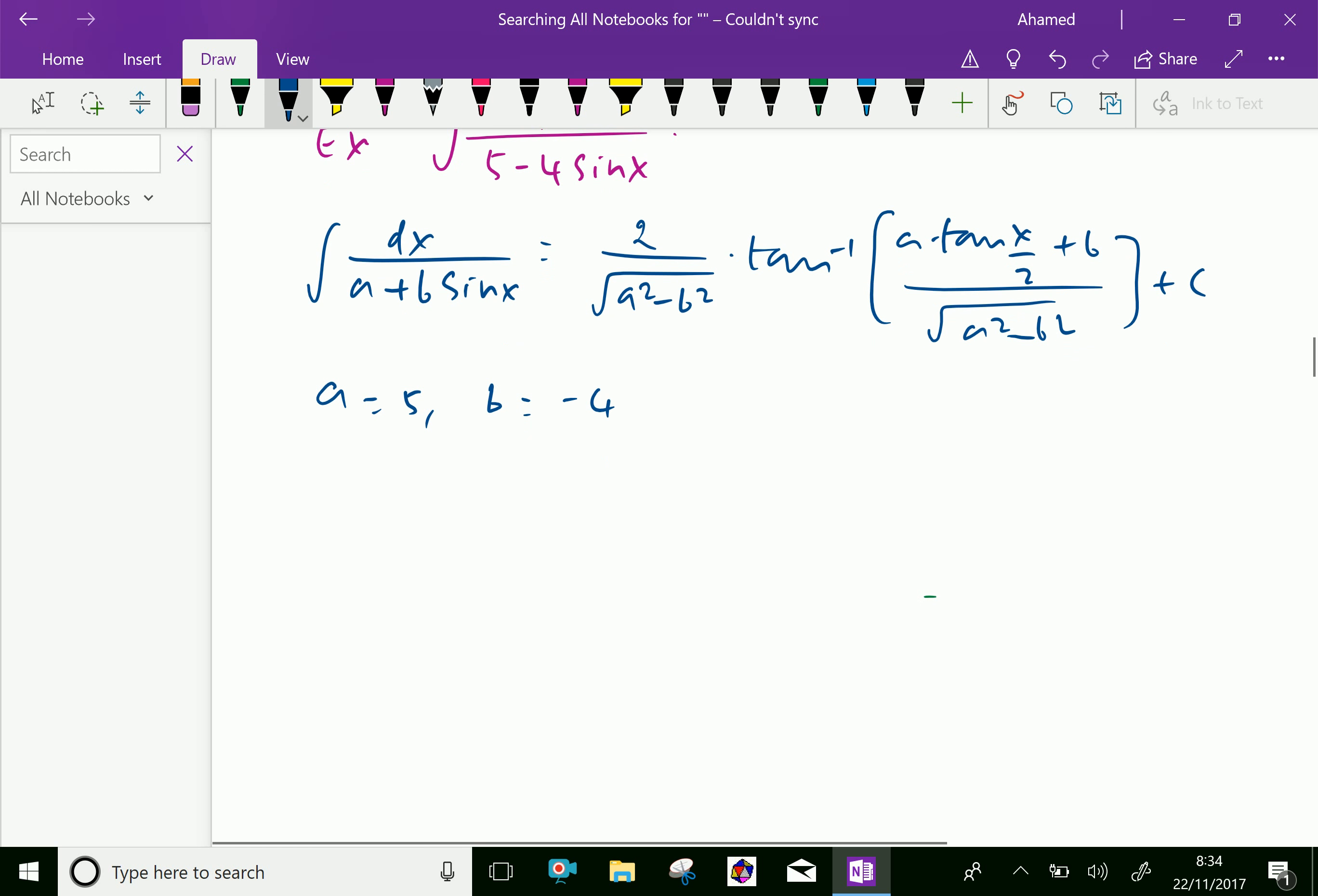Therefore, square root of a squared minus b squared: 5 squared minus minus 4 squared equals 25 minus 16. Square root of 25 minus 16 is 9, square root of 9 is 3.